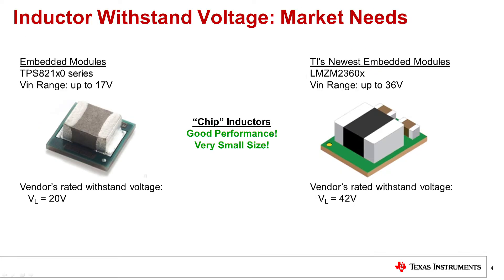This topic is important because the market is asking for devices with higher input voltage ratings. Some of our embedded modules operate up to 17 volts input. Our newest embedded modules operate up to 36 volts input, and we are seeing requests for 65 volt input devices and even higher.